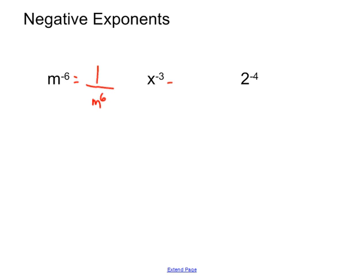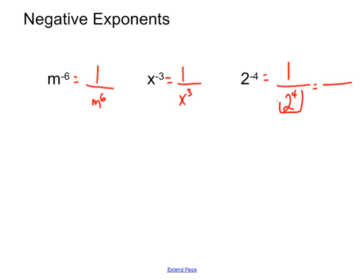How do we make x to the negative 3rd positive? Draw a fraction bar and move the x downstairs — the negative 3 becomes positive 3, and we put a 1 on top. For 2 to the negative 4th, same thing: move it downstairs, the negative 4 becomes a positive 4, and we put a placeholder of 1 up top. Negative exponents do not mean negative numbers — they literally just mean very small numbers. 2 to the 4th is 16, so 2 to the negative 4th equals 1 over 16.